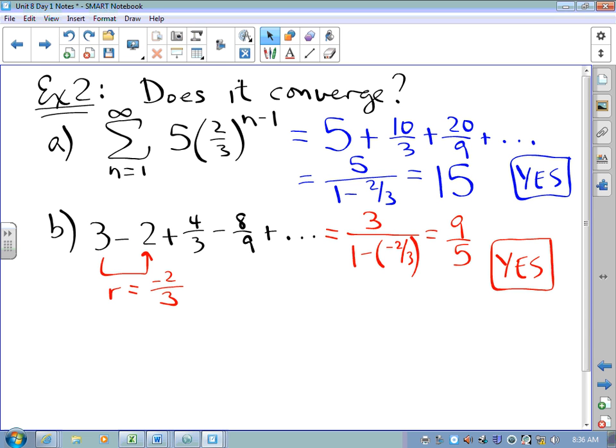And what that means is the more partial sums you take, the more terms you include in a partial sum, the closer you're going to get to 9 fifths. If we added the first 100 terms, then the first 1,000 terms, then the first 10,000 terms, and so on, those partial sums, we get closer and closer to 9 fifths.